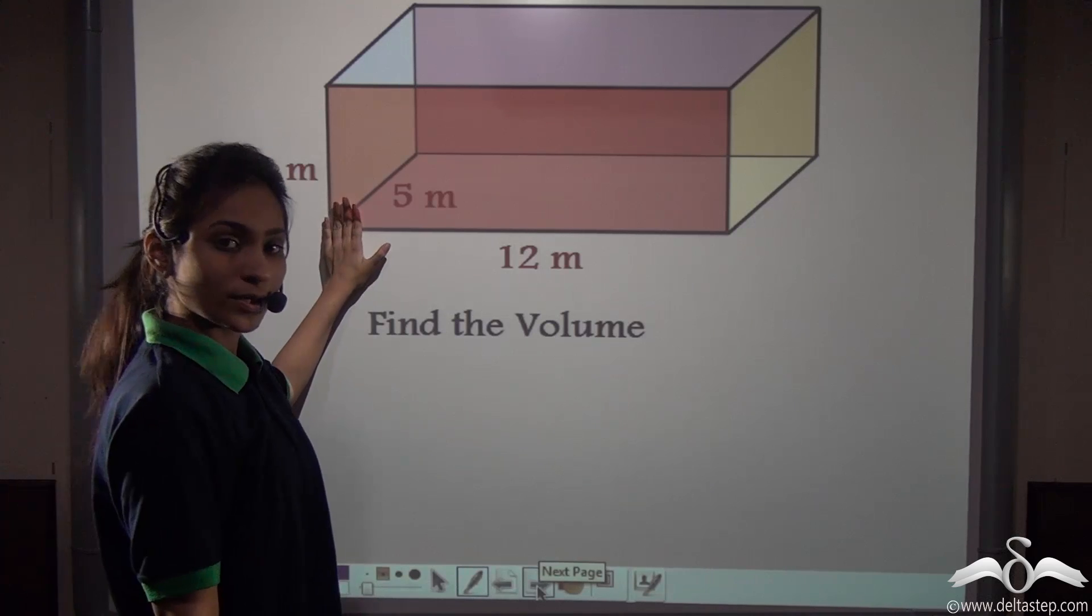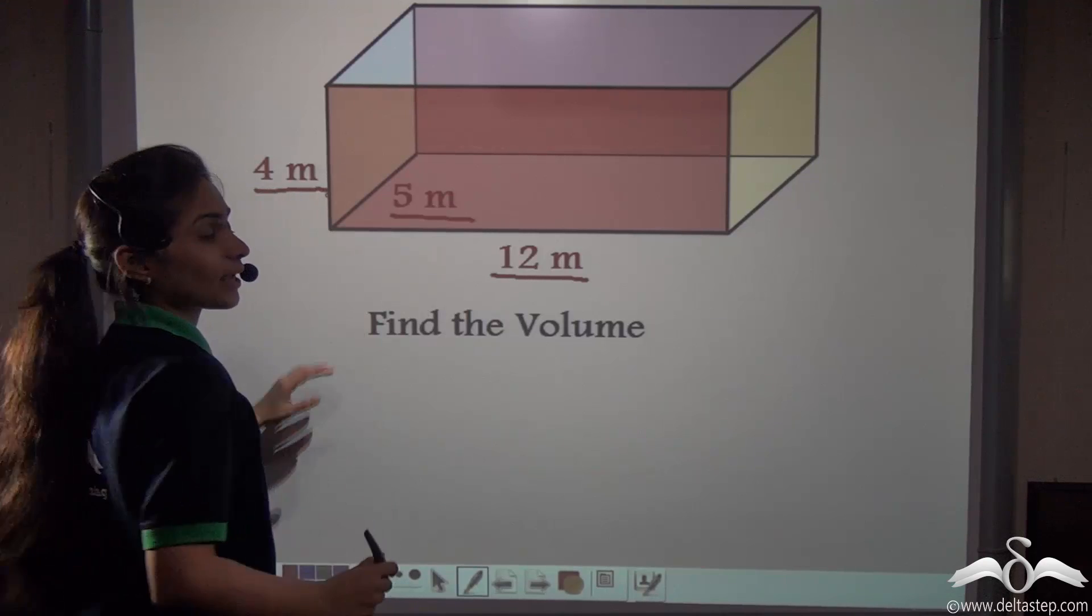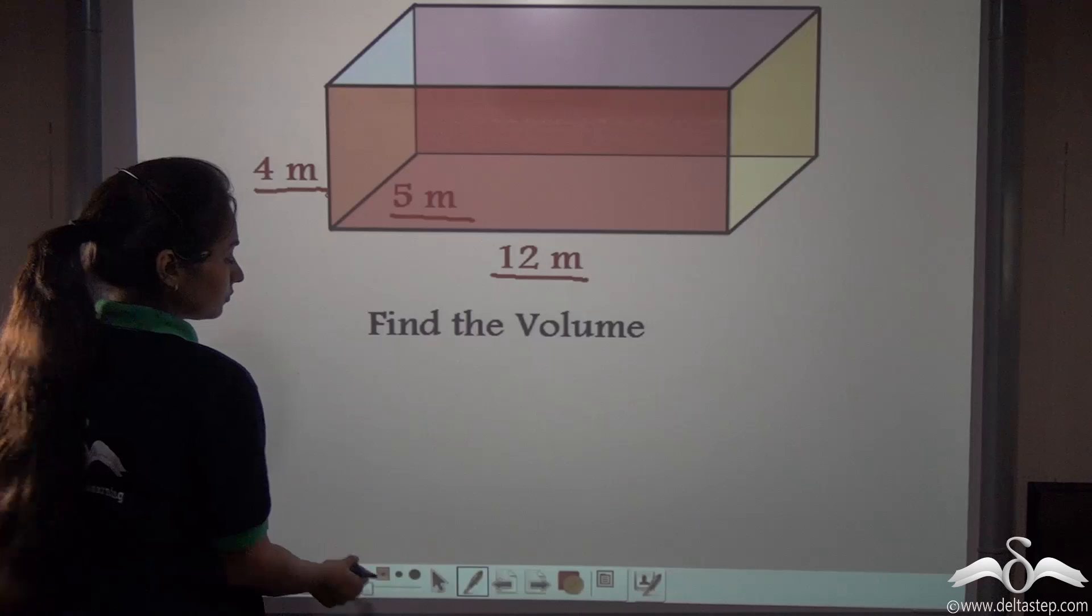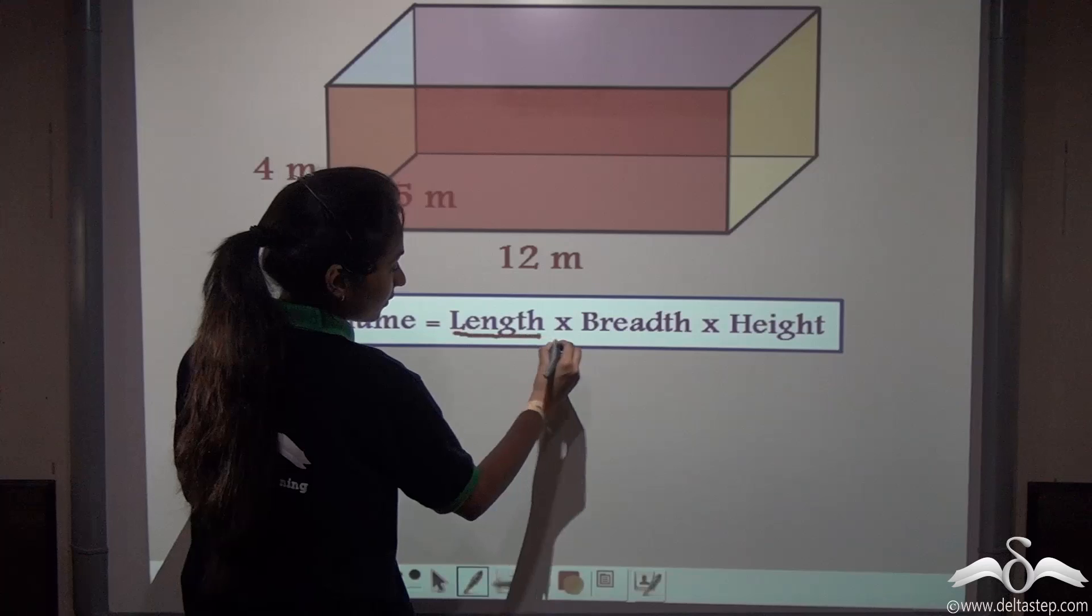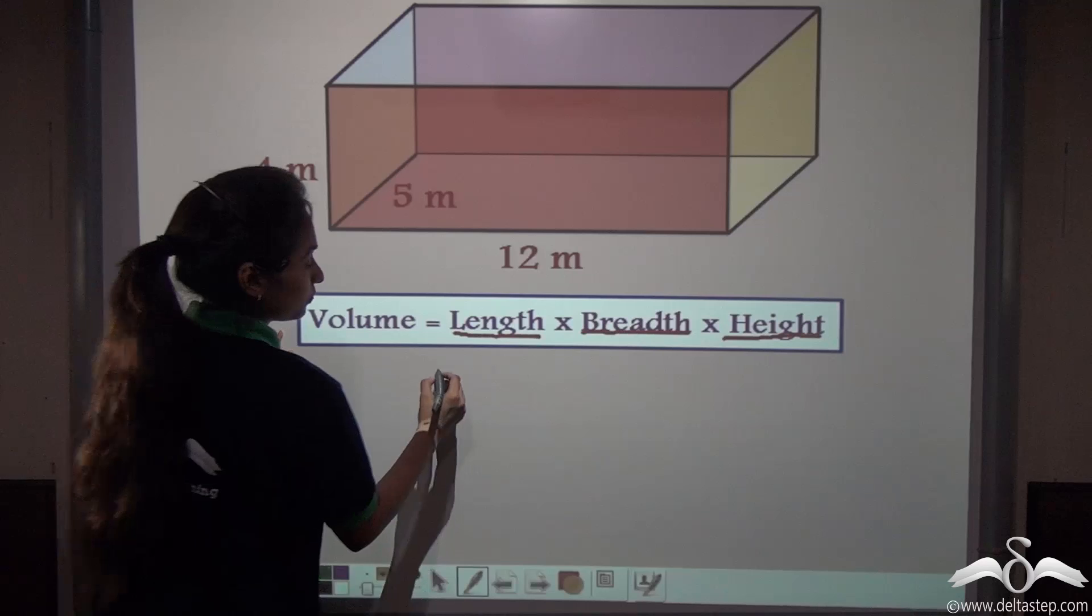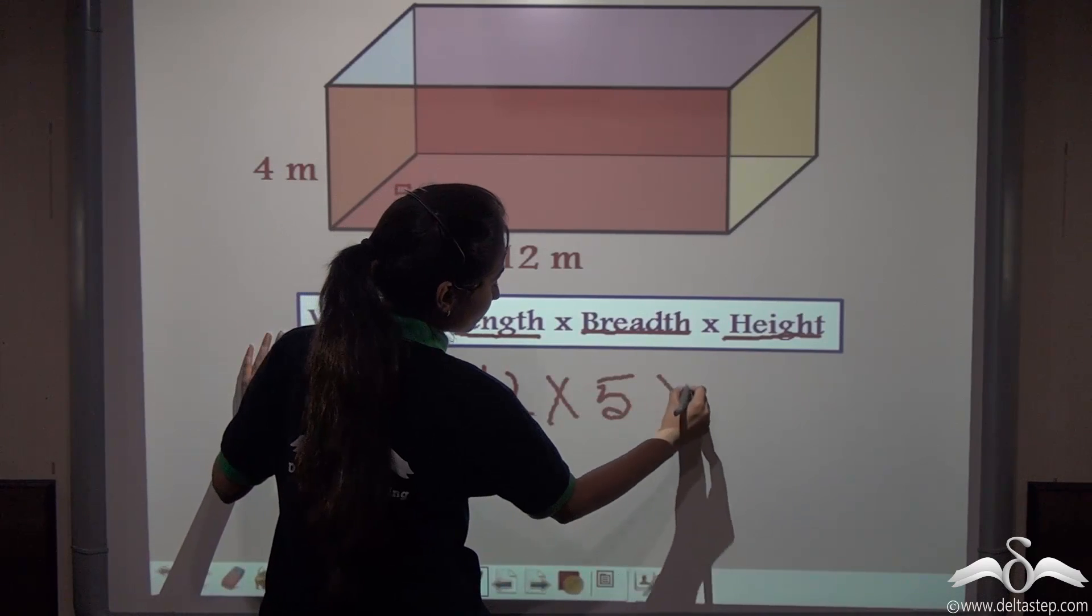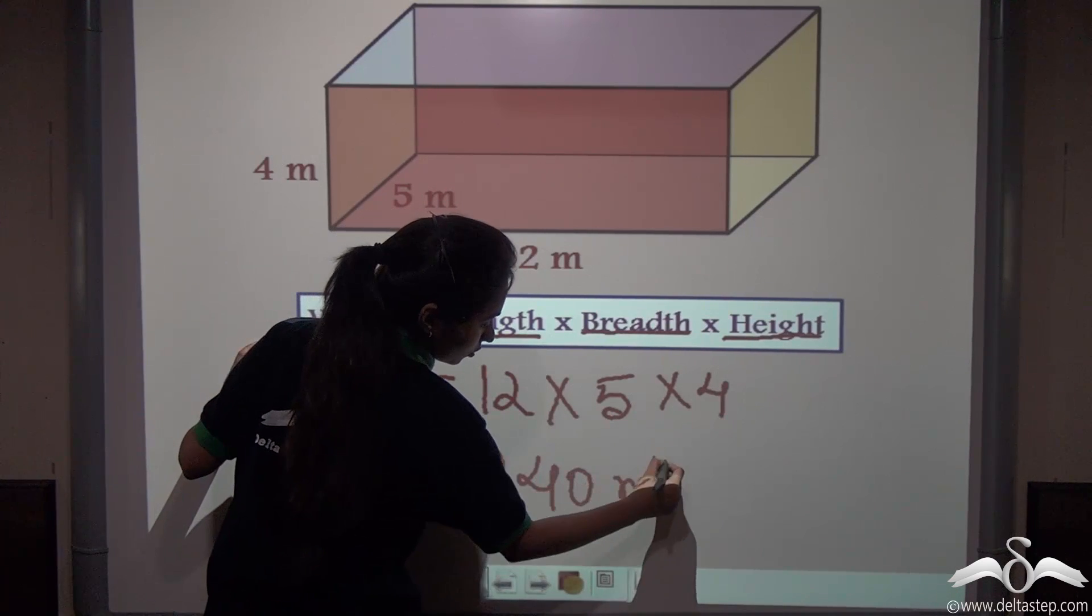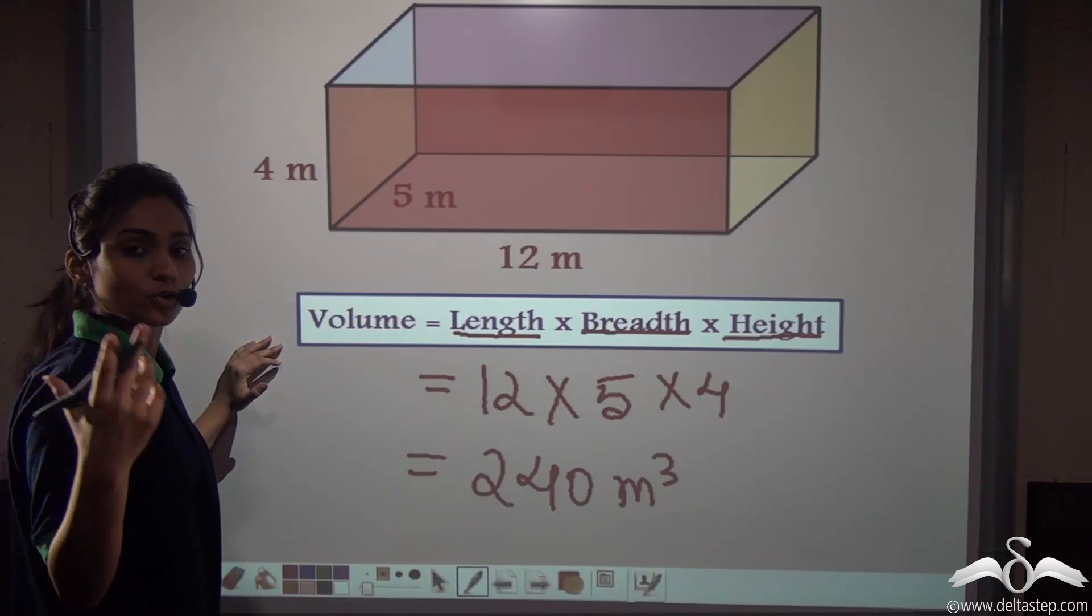Now this is a cuboid you can see. We have the dimensions as 12 metre, 5 metre and 4 metre. Can you find out the volume of this cuboid? We know that the volume of a cuboid can be calculated with the formula length into breadth into height. So simply we will put the values here and find out the volume. So it is 12 into 5 into 4. This is 240 metre cube.